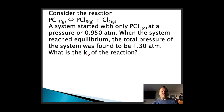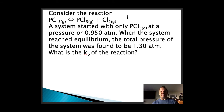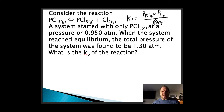Next problem: PCl5 is in equilibrium with phosphorus trichloride and chlorine. The system started with only PCl5 at a pressure of 0.95 atmospheres. When the system reached equilibrium, the total pressure was found to be 1.30 atmospheres. We need to find Kp. The Kp expression equals the pressure of PCl3 times the pressure of Cl2 divided by the pressure of PCl5.